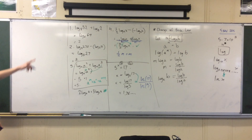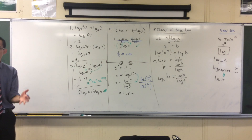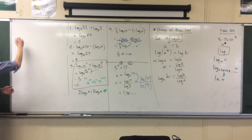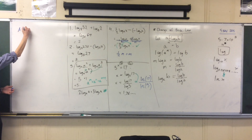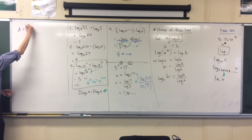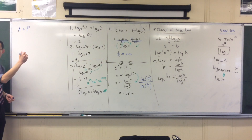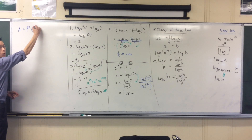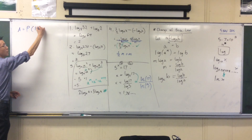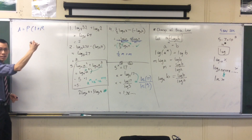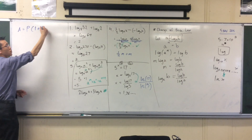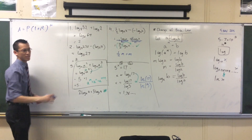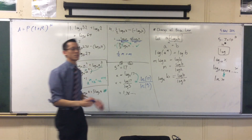Compound interest formula — as this just warms up, what is the compound interest formula? Someone say it for me. It starts with an A. Okay, P for principal, times what? 1 plus, usually R in here, to the power of N. And some of them can be lowercase, it doesn't really matter.